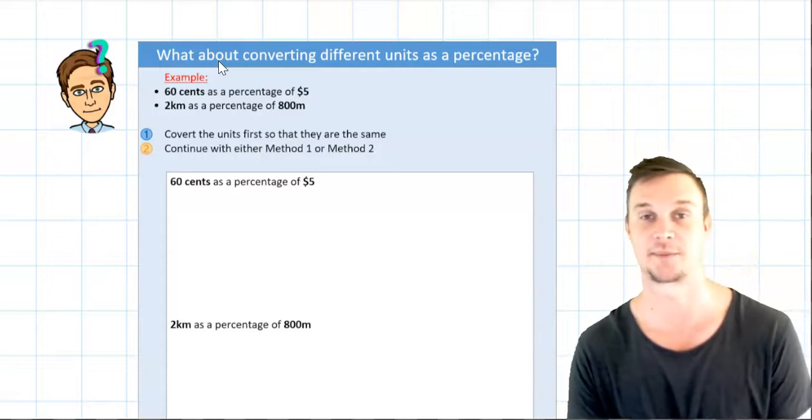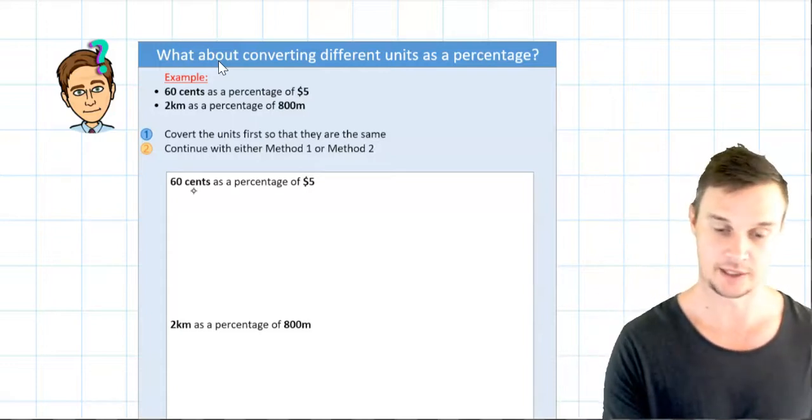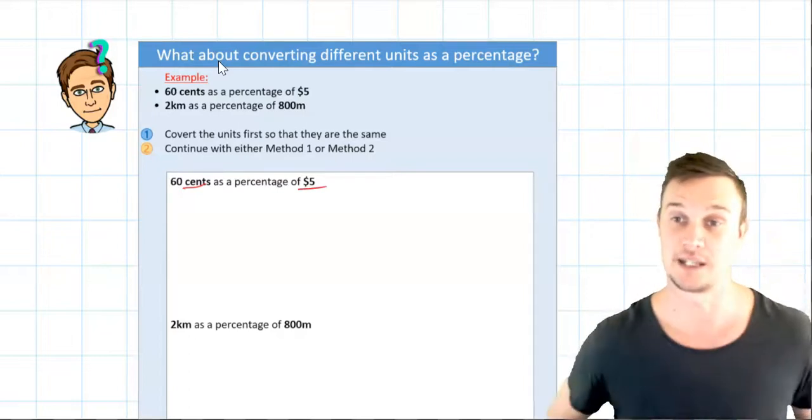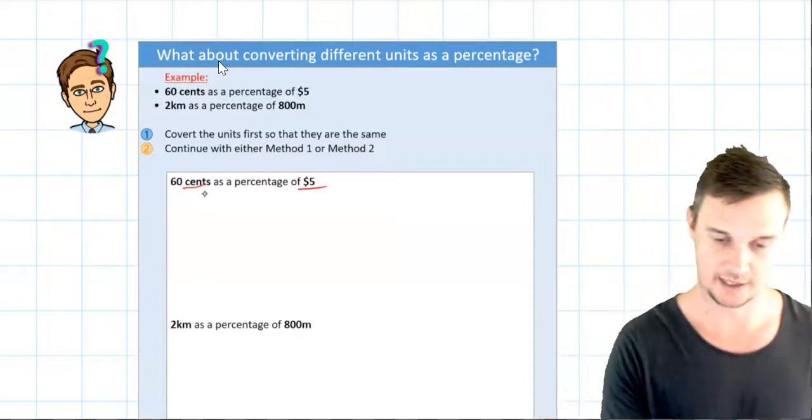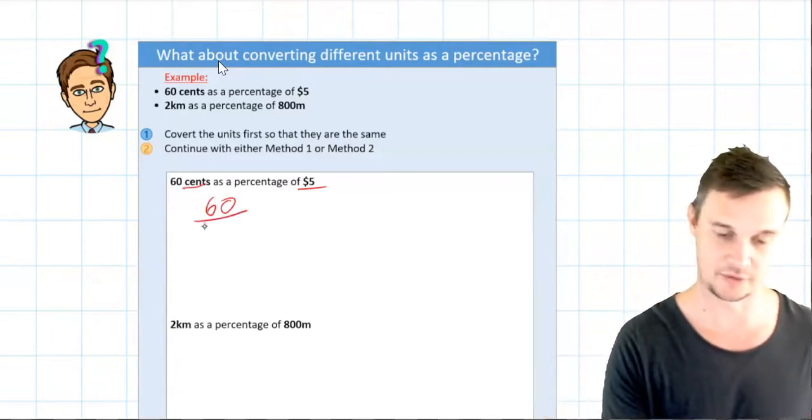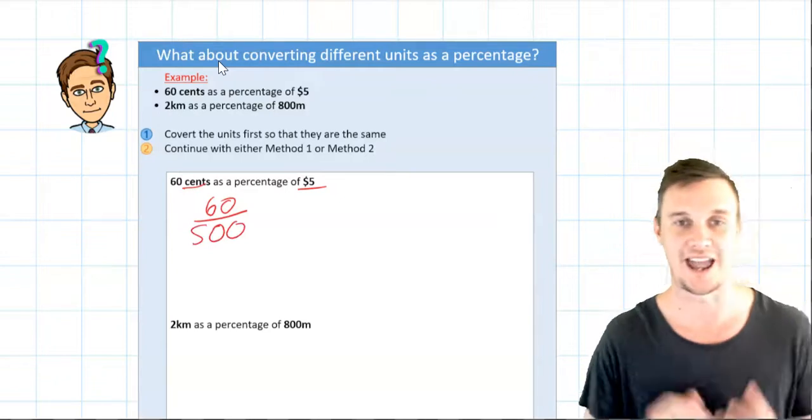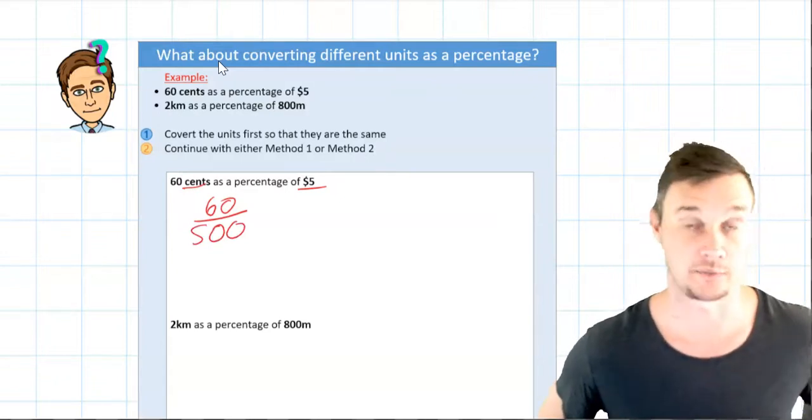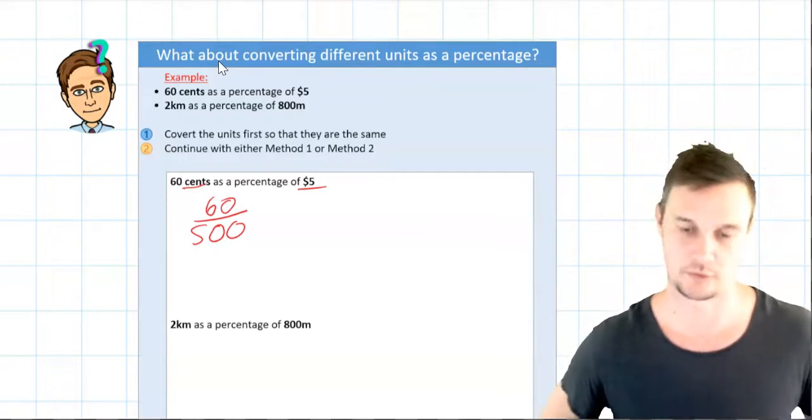And then you're just going to continue with method one or method two as you see fit. For example I have 60 cents as a percentage of five dollars. Now I can't combine cents and dollars so I'm going to convert them both into in this case cents. So I have 60 cents and to convert five dollars, that is now 500 cents.